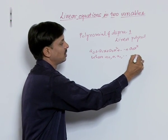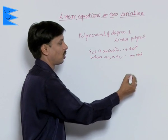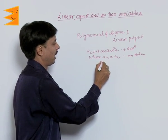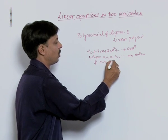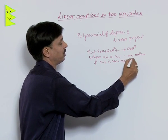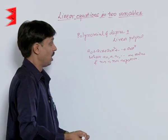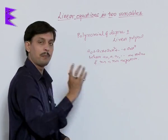These are the real numbers. These coefficients are the real numbers. And n is non-negative integer. So this is the definition of a polynomial.